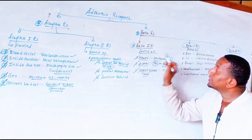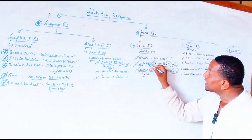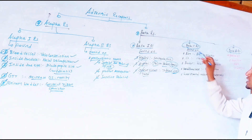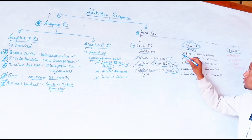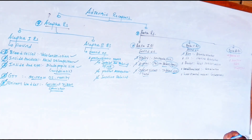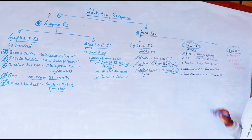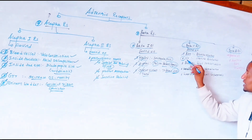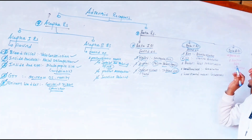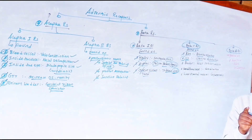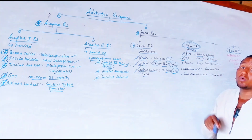The second one is Beta 2 receptor. The first location is the bronchial smooth muscle. When an adrenergic drug stimulates Beta 2 in the bronchial smooth muscle, it causes bronchial dilation. The next location is the uterus. Beta 2 is important for uterine relaxation. Beta 2 agonist drugs are used by gynecologists when women have a risk for pre-term delivery.